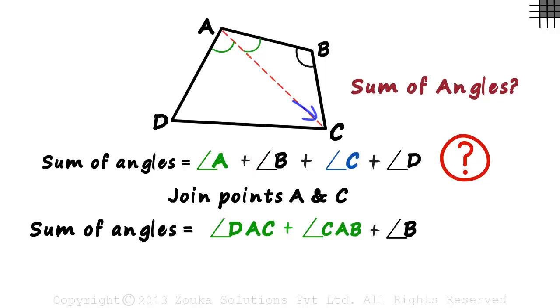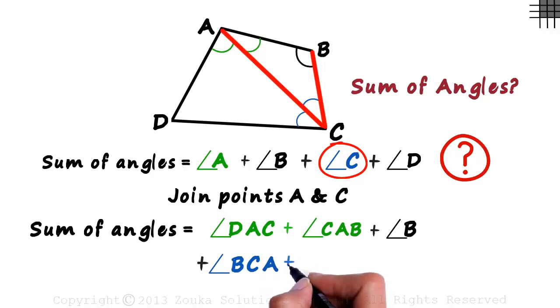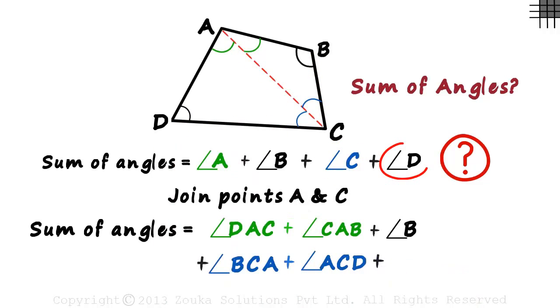Angle C will equal the sum of these two angles. It can be written as angle BCA plus angle ACD. Angle D is written as is.